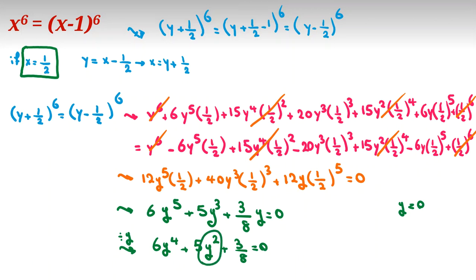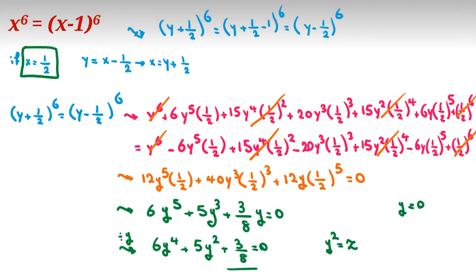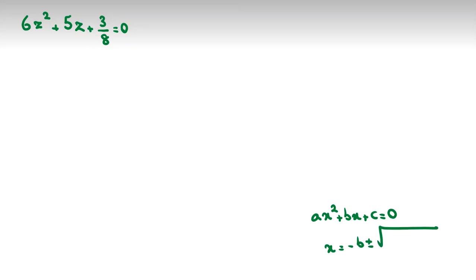This is a quadratic function in terms of y squared. Let z equal y squared. Then the equation becomes 6z² plus 5z plus 3/8 equal to zero. Using the quadratic formula — x equals negative b plus or minus square root of b squared minus 4ac, all over 2a — we substitute a equals 6, b equals 5, c equals 3/8.